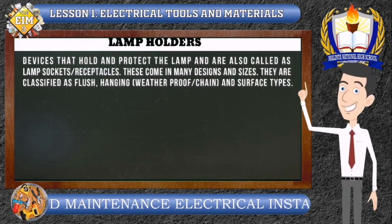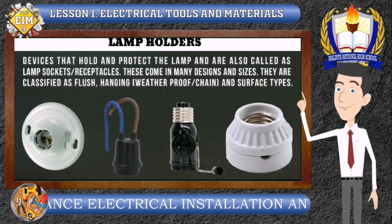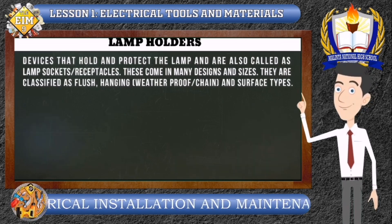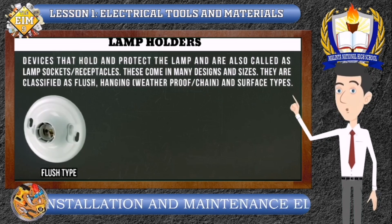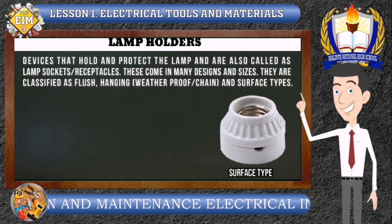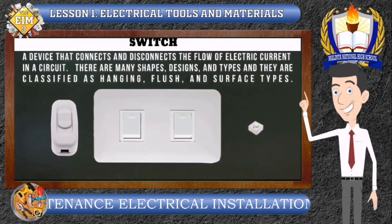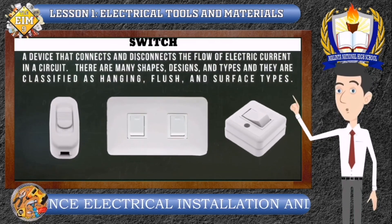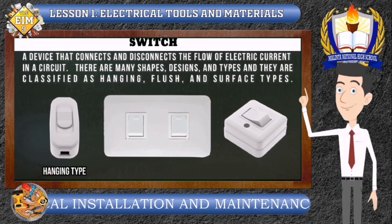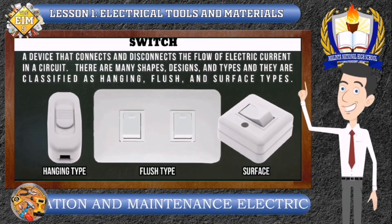Lamp Holders are devices that hold and protect the lamp and are also called lamp sockets or receptacles. These come in many designs and sizes and are classified as flush type, hanging, and surface type. Switch is a device that connects and disconnects the flow of electric current in a circuit. There are many shapes, designs, and types of switches and they are classified as hanging type, flush type, and surface type.